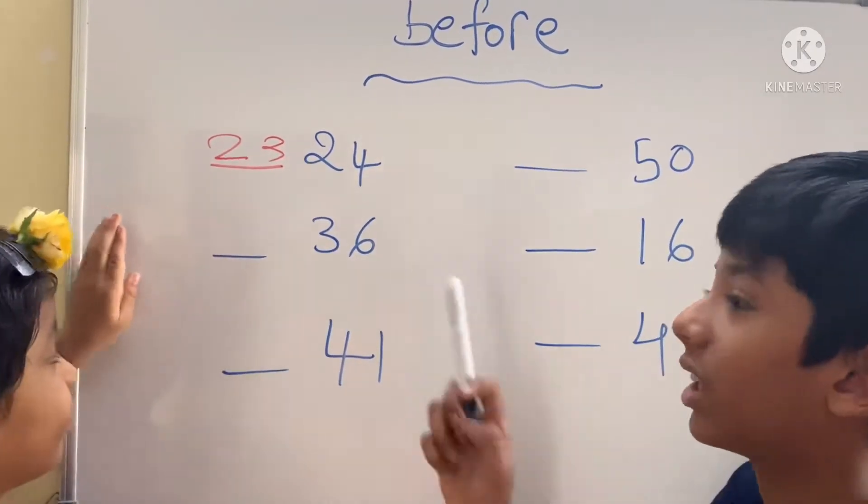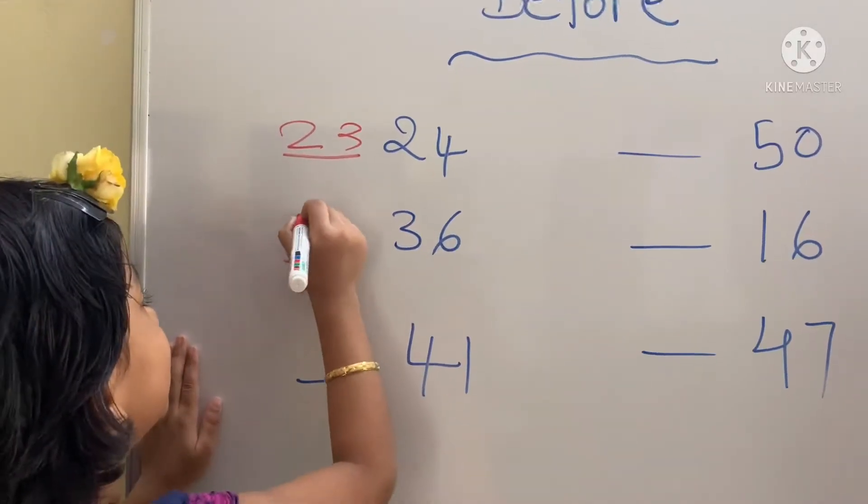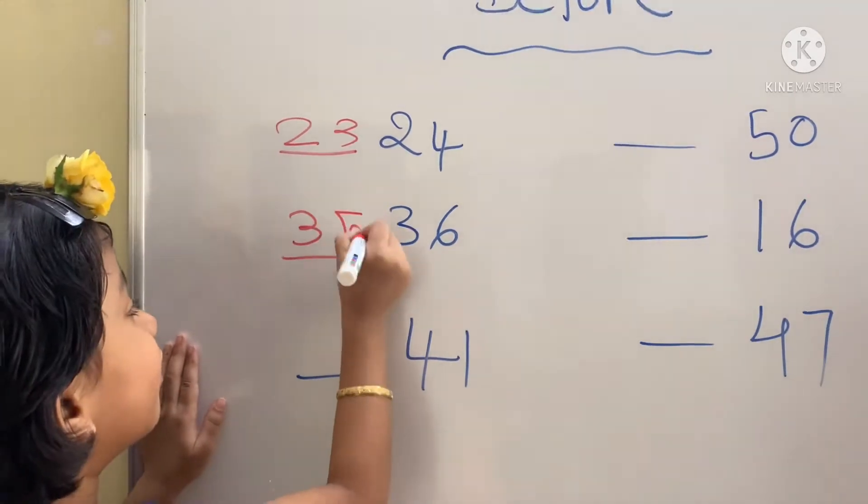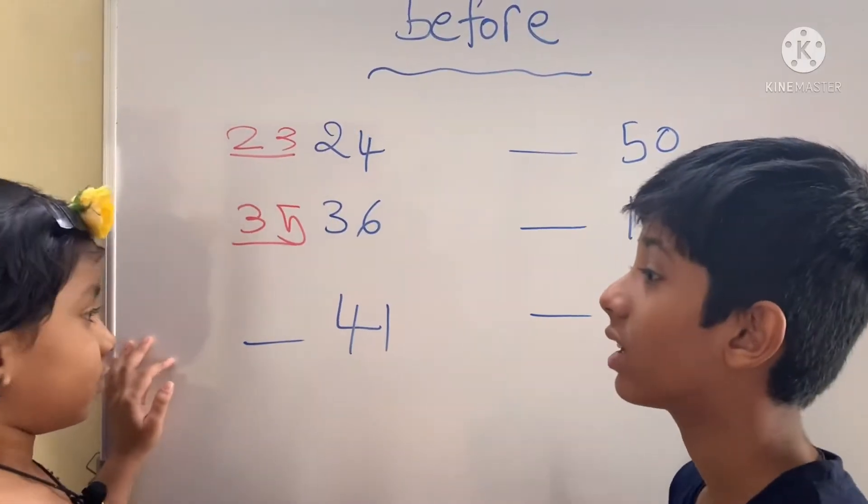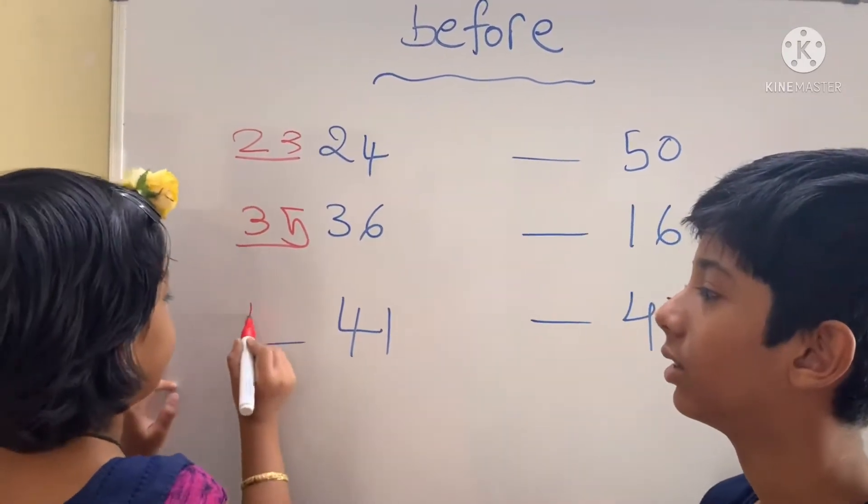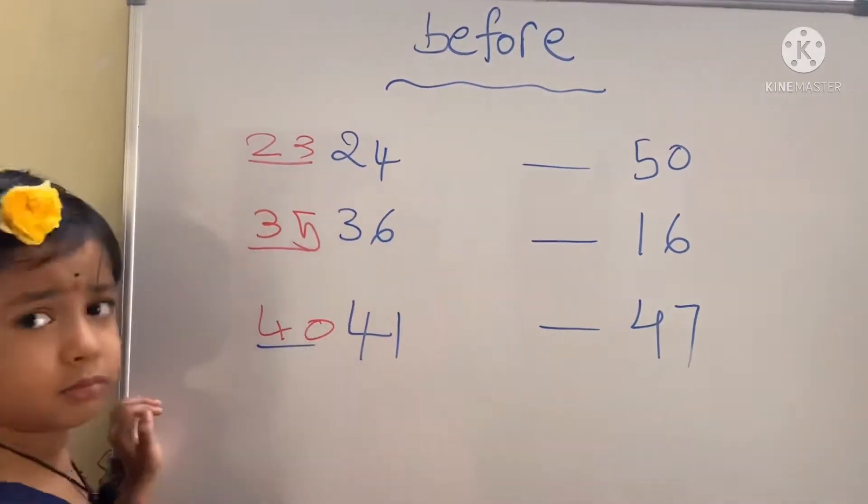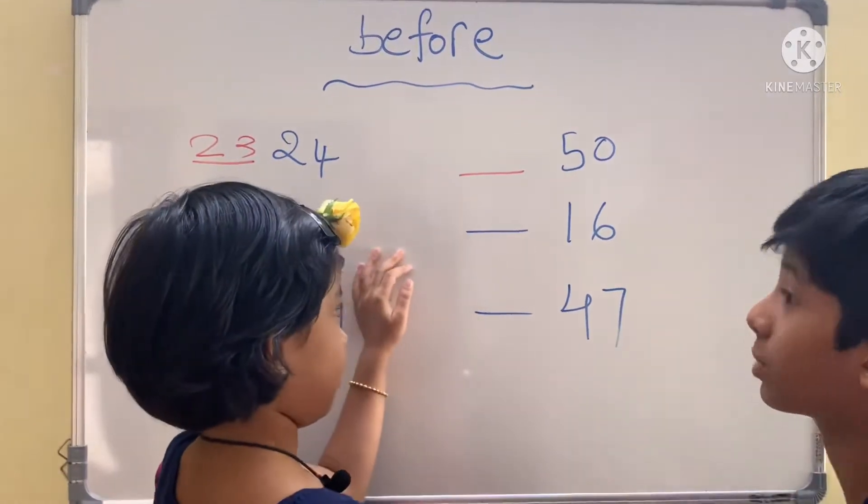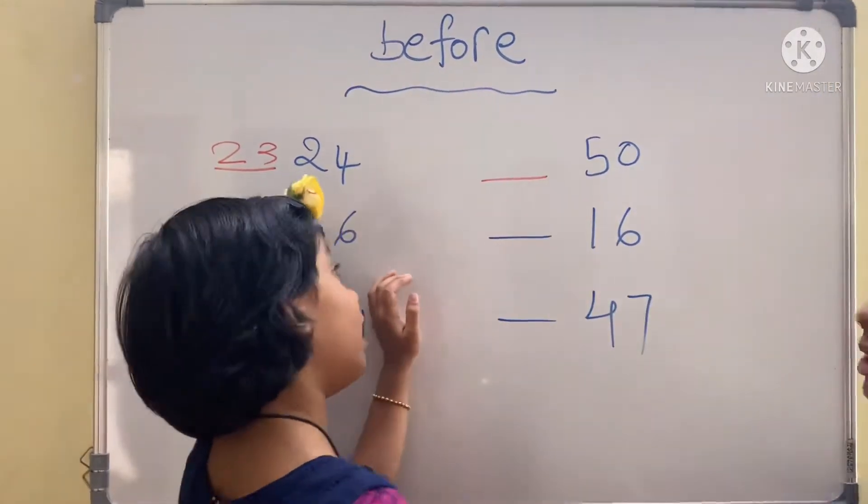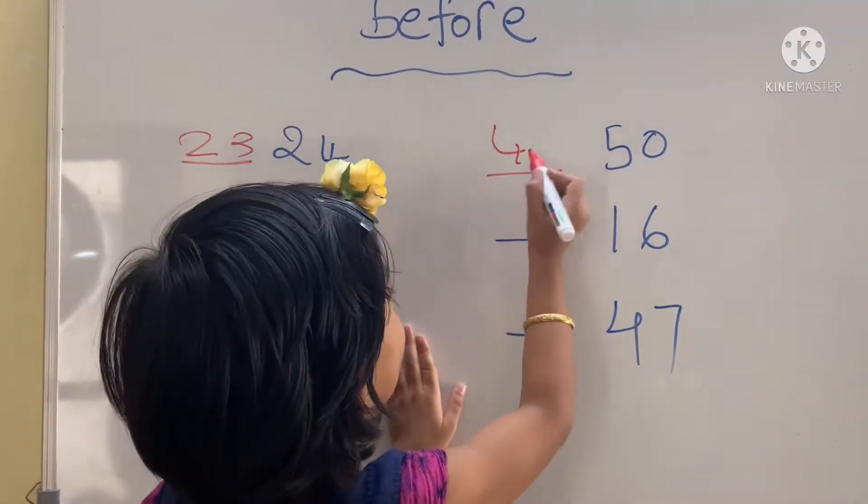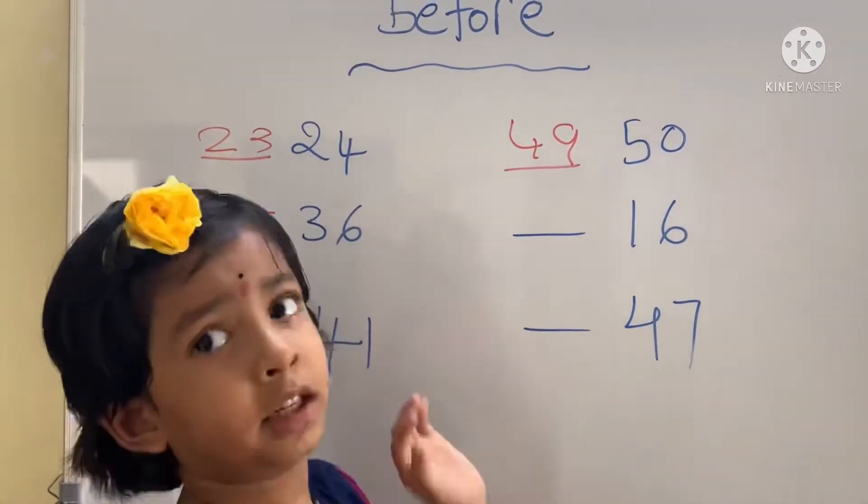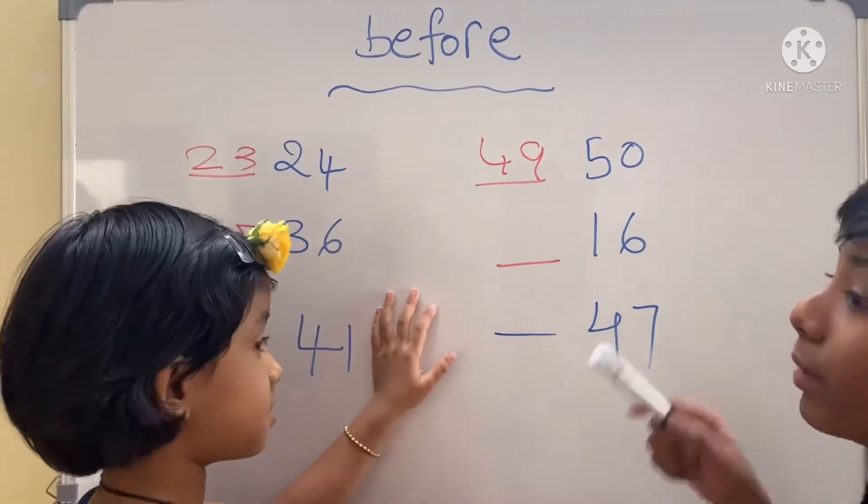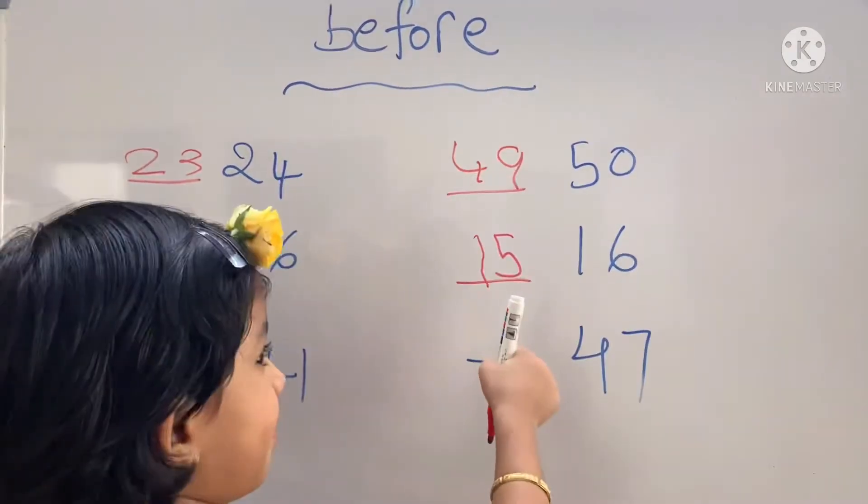Three tens, five ones, 35. Which number comes before 41? 40. Which number comes before 16? 15. One ten, five ones, 15.